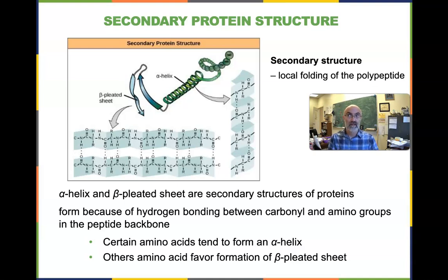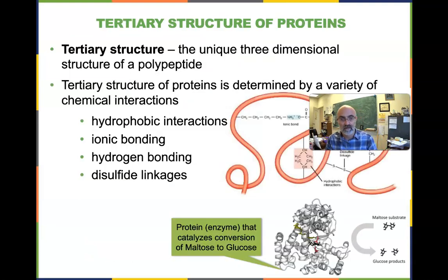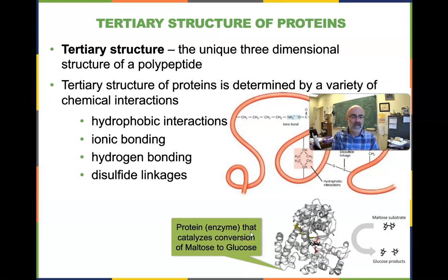Tertiary — secondary is determined by primary, so we can predict the tertiary structure is determined by the secondary structure. The tertiary structure is the final three-dimensional structure of that polypeptide. Here on the bottom is a large enzyme that converts maltose to glucose — it breaks apart that disaccharide. We can see the secondary structures inside of this protein.